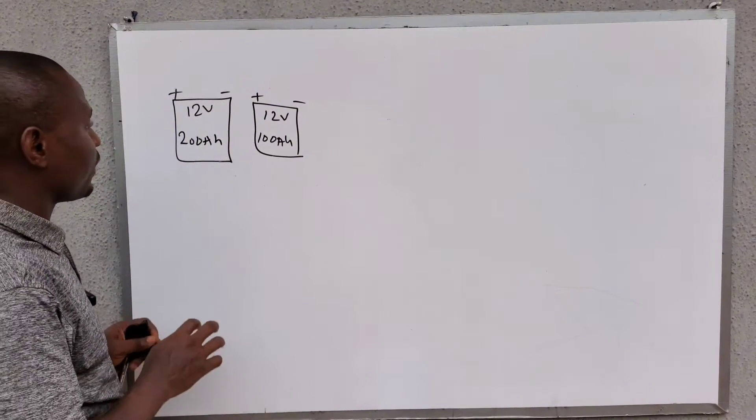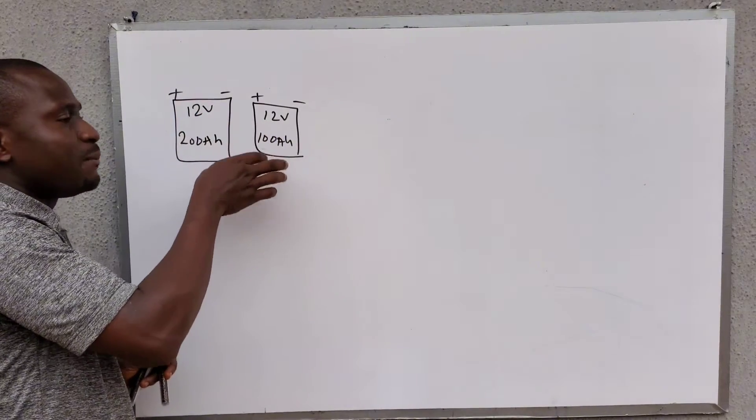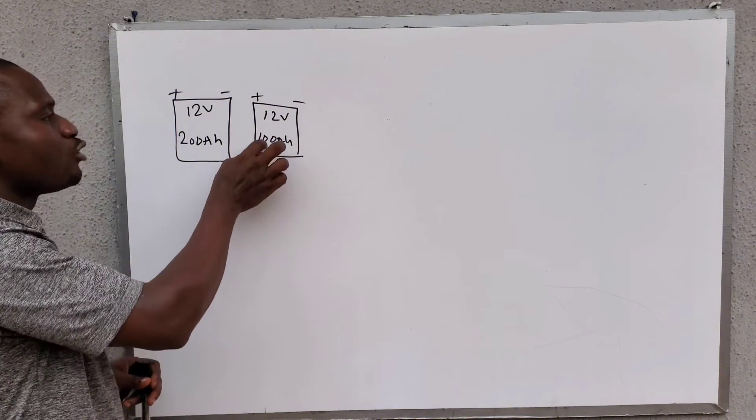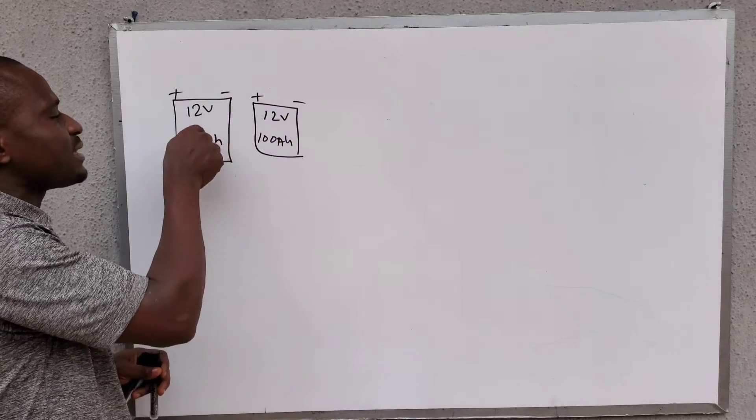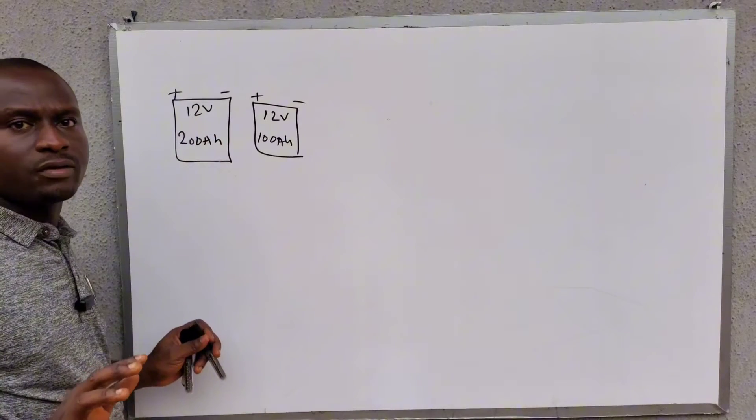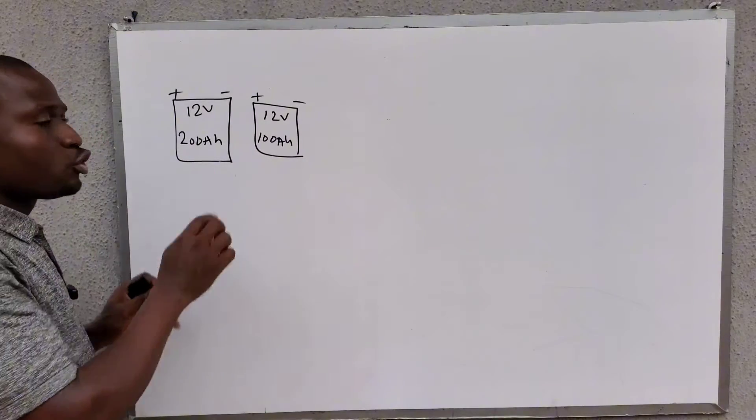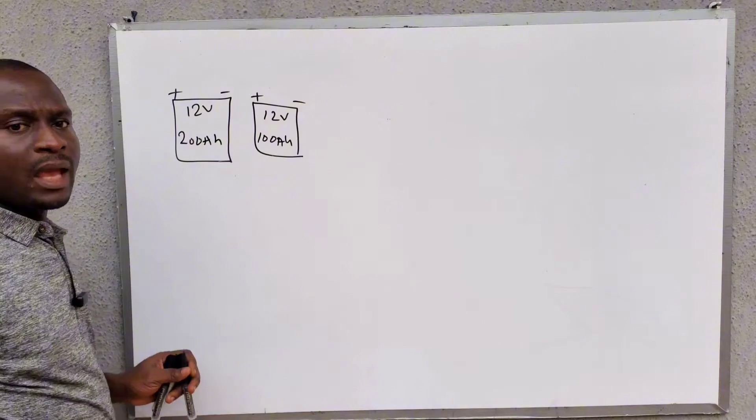Now, this is the effect. If you connect these two dissimilar batteries in the same battery bank, whether in series or in parallel, what will happen is that this 100Ah battery during charging will always charge faster than the 200Ah battery. It will charge faster. And by so doing, the battery, this one, this 100Ah will die faster.